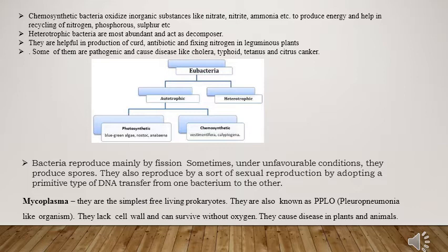The other type of bacteria are heterotrophic bacteria. These bacteria act as decomposers. For example, eubacteria help in the formation of curd — lactobacillus is a form of eubacteria. Some bacteria help in the formation of antibiotics, and some help in nitrogen fixation in leguminous plants — for example, Nostoc or Anabaena.